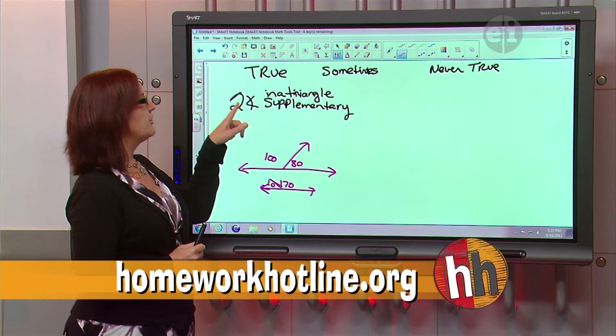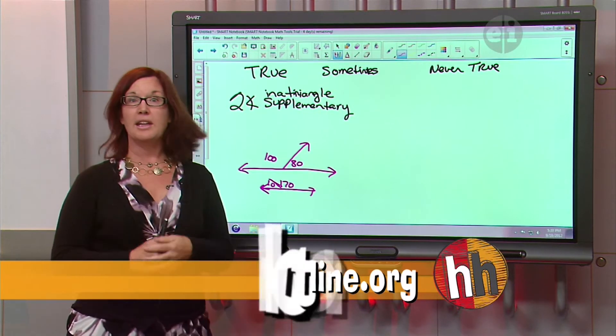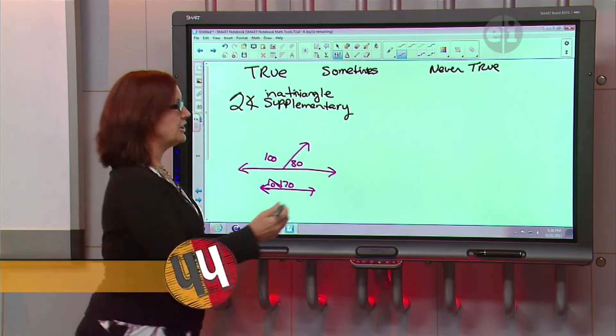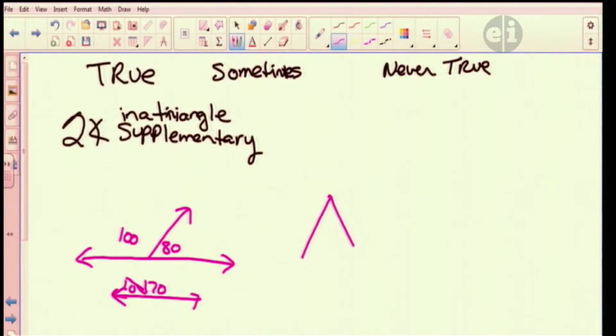So now we're talking about we have two angles that are in a triangle, and we want to know whether they can be supplementary. Well, in a triangle... Do you know how many degrees all triangles add up to? 180 degrees. 180 degrees. And how many angles do they have? Three. They have three angles.